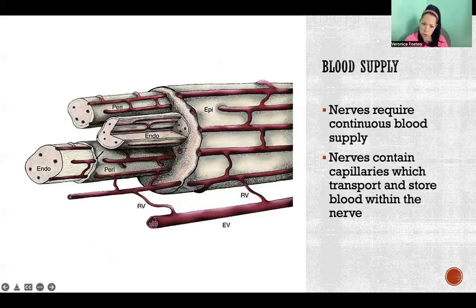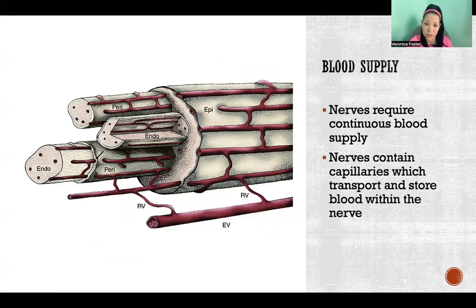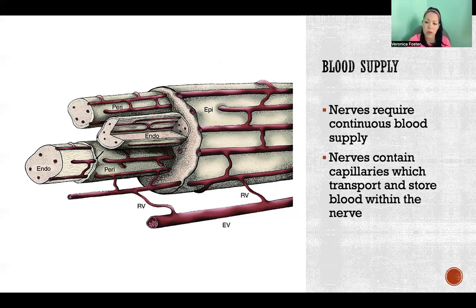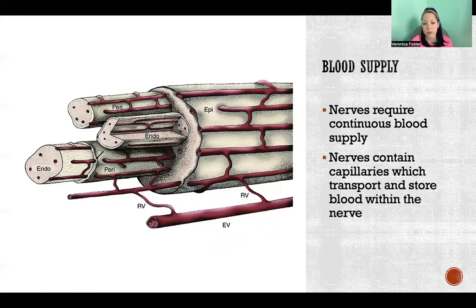I want to touch on briefly the blood supply to a nerve. Nerves require continuous blood supply or they lose function — the tissue will actually die. So nerves contain abundant blood capillaries so that blood can be delivered to the neuron. Those capillaries not only deliver blood, but they also store blood inside of the nerve so that we can maintain that continuous blood supply.